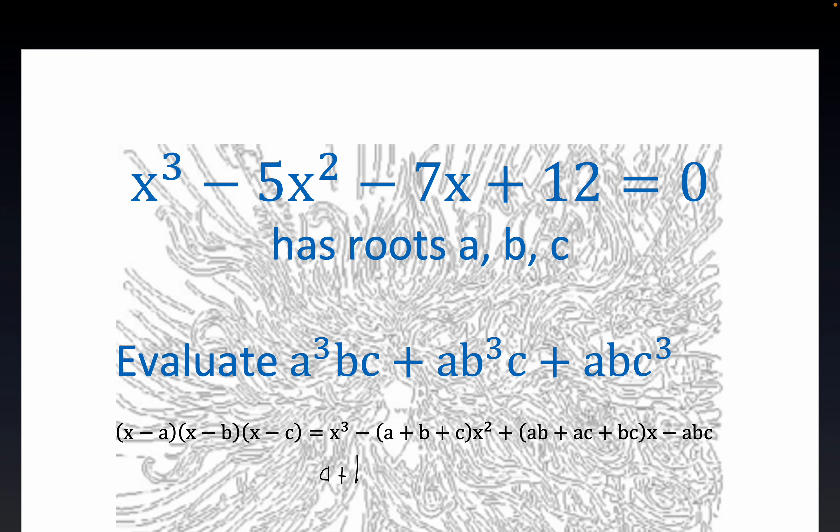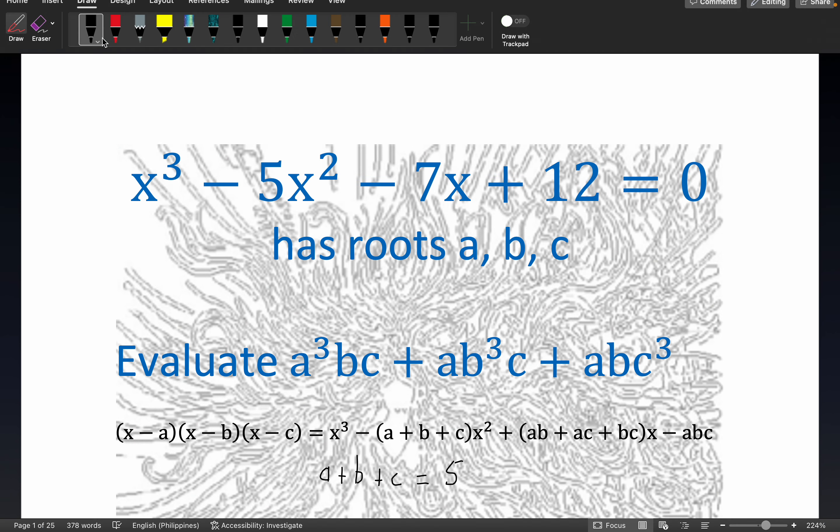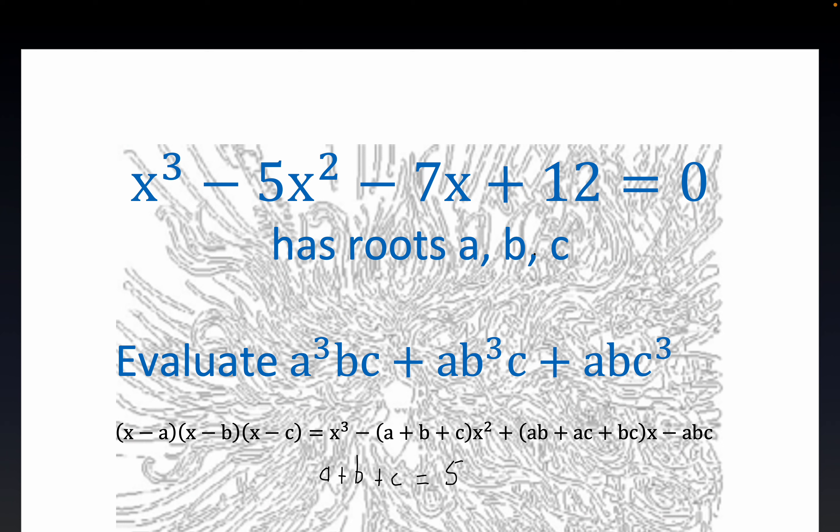The minus signs go away, we're just equating coefficients here, so A plus B plus C must equal to five. Notice how the minus pops out automatically when you're expanding this expression, and there is already a minus in front of the five here, and so when you equate this minus object with this minus object, the minus signs cancel, and you get the sum of the roots is five. So whatever the roots are, they sum up to five.